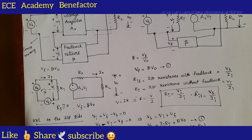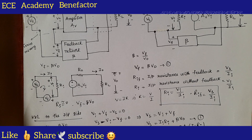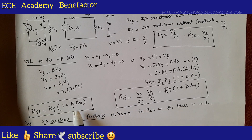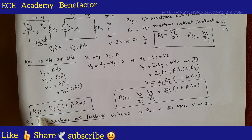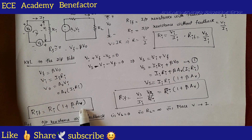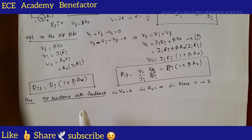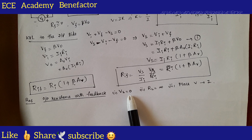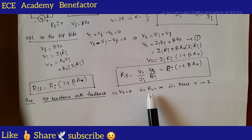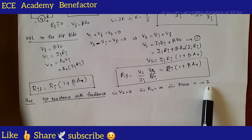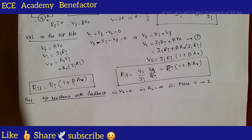I hope you have understood the equivalent circuit diagram. In our previous class we derived R i f — the input resistance with feedback — which came out as R i f equals R i times of (1 plus beta A v). In this class we will derive R o f, the output resistance with feedback. For deriving this output resistance, three conditions must be satisfied: make the input voltage source V s equal to zero, remove R L by making it infinity, and replace R L with a voltage source delivering a current i to the circuit.